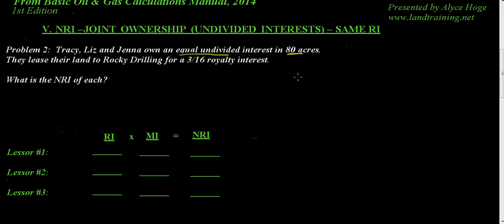So they each own an equal one-third. They lease their land to Rocky Drilling for a three-sixteenth royalty interest. So they all have the same royalty interest.